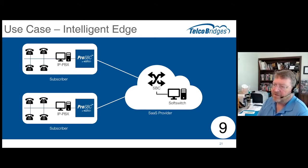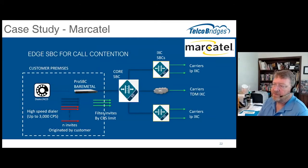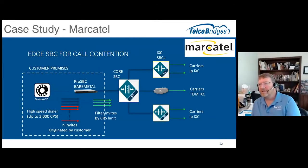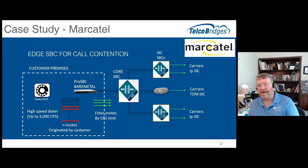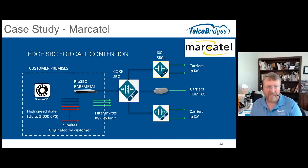Logically, it's the same as putting it in the core of the network. The only difference is we're going to put it out at the customer's prem. One of our early case study customers that did this was Macatel. They're a Mexican operator based in Monterrey, Mexico, and they were suffering from some customers having high-speed dialers.